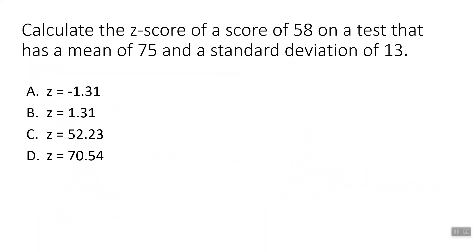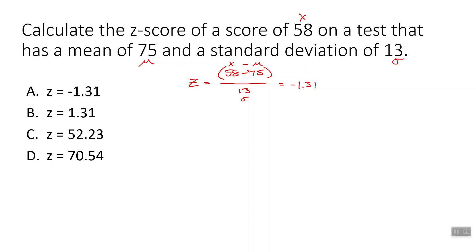Here's another example: calculate the z-score of a score of 58 on a test that has a mean of 75 and a standard deviation of 13. So our x value is 58, mean is 75, standard deviation is 13. We do x minus the mean divided by the standard deviation. It's definitely negative — the answer is negative 1.31.